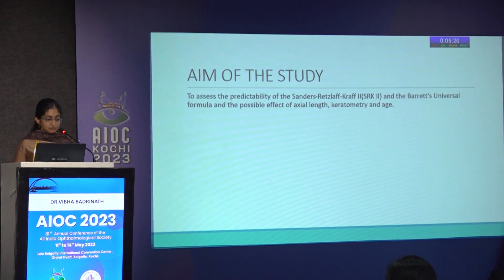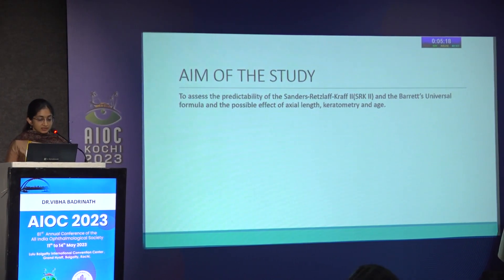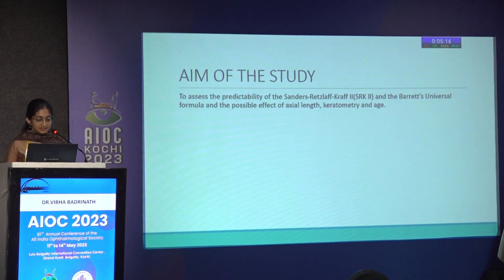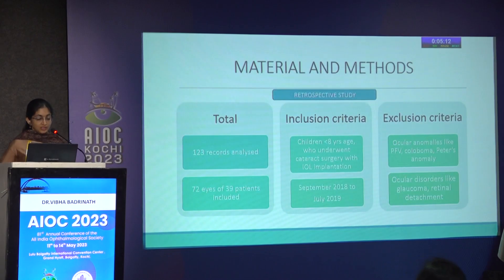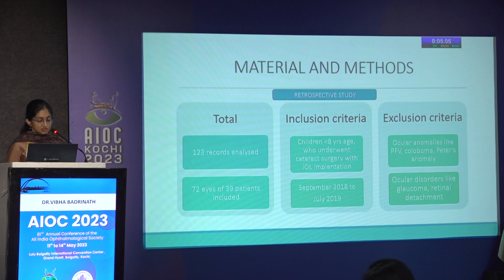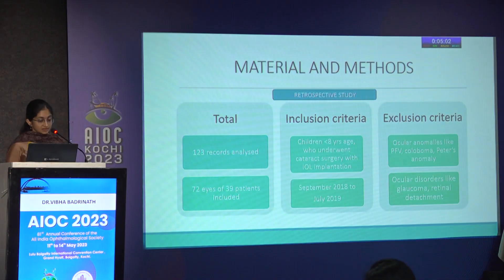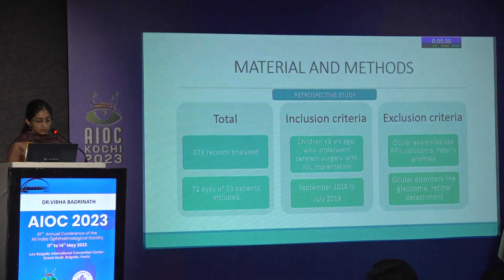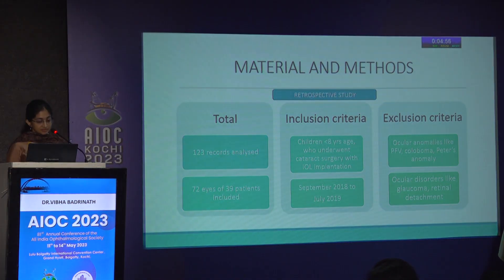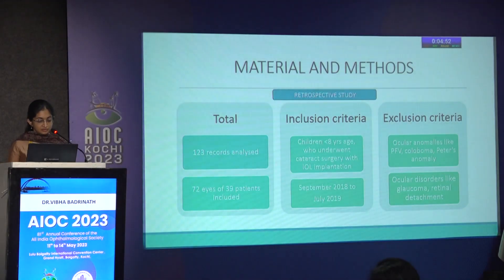The aim of our study was to assess the predictability of SRK2 and Barrett's Universal 2 formula, and the possible effect of axial length, keratometry, and age. It was a retrospective study. A total of 123 records were analyzed and 72 eyes of 39 patients were included. Children under 8 years of age who underwent cataract surgery with IOL implantation were included. Children with other ocular anomalies like persistent fetal vasculature, coloboma, glaucoma, or retinal detachment were excluded.